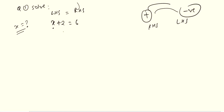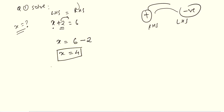So: x plus 2 equals to 6. We will transpose this plus 2 to the right hand side, towards 6. A common error students make is forgetting the sign change. So: x equals to 6 minus 2, which gives us x equals to 4. That is the final answer for question number 1.